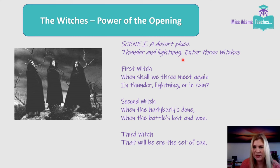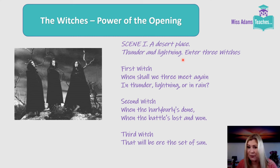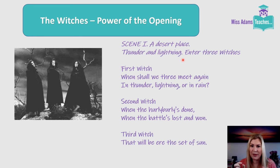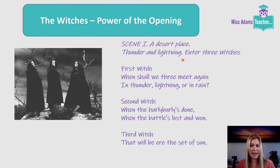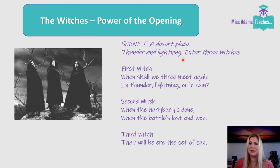They are also introduced with thunder and lightning. This pathetic fallacy is really important because whenever the witches appear there is always thunder and lightning. It cements the idea of their power — they're associated with powerful weather — but it also has the capacity for massive destruction and violence, making it a really fitting symbol for the witches.